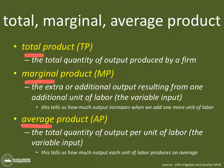In Theory of the Firm, total, marginal, and average come up a lot, and what changes is the suffix. I like to think of it as a prefix and a suffix. In this case, the suffix is 'product.' So keep that in mind — it's super helpful. So in this case, we're talking about total product.